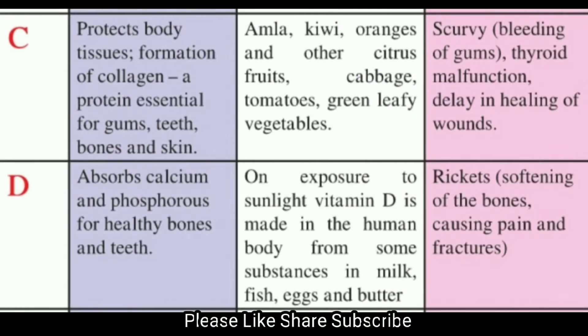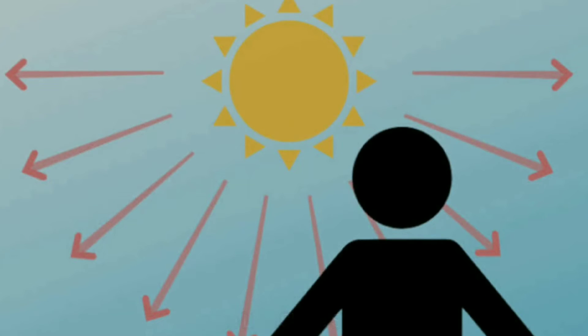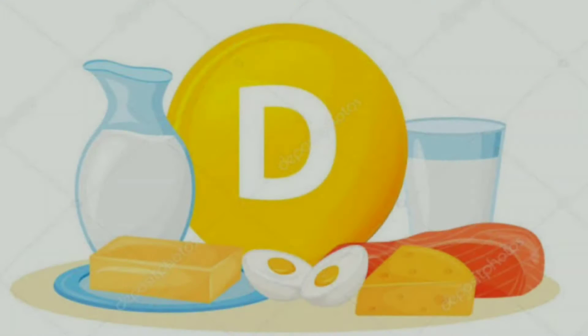Vitamin D absorbs calcium and phosphorus for healthy bones and teeth. Sources: on exposure to sunlight, vitamin D is made in the human body from some substances; also found in milk, fish, eggs, and butter.